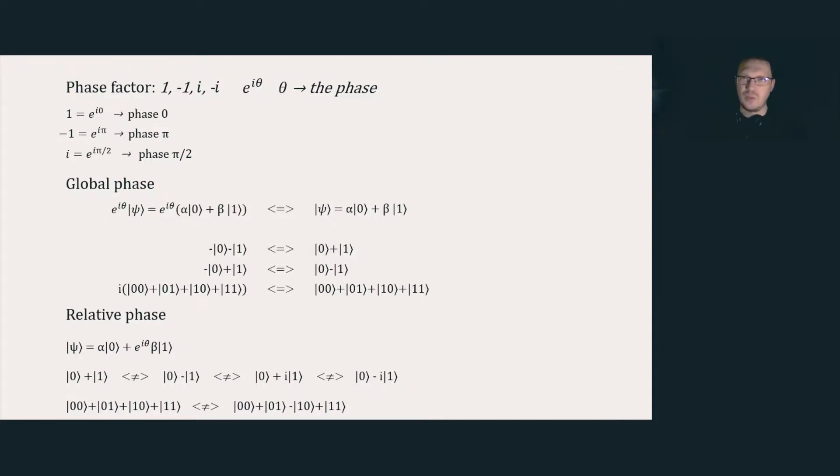We all know that 0, plus 1 is the plus state and is not the same as 0, minus 1, which is the minus state. These all differ from 0, plus i1 or 0, minus i1 by having different relative phases.